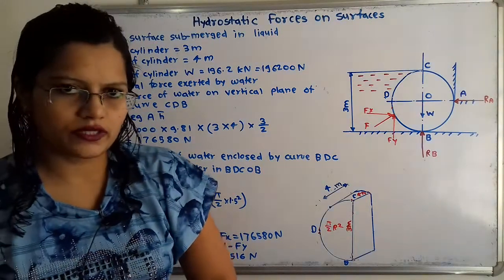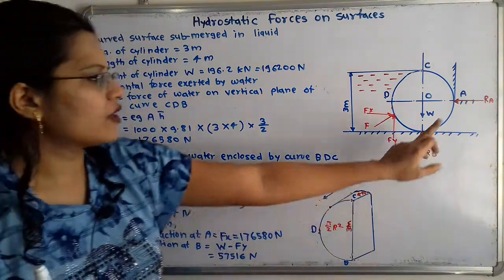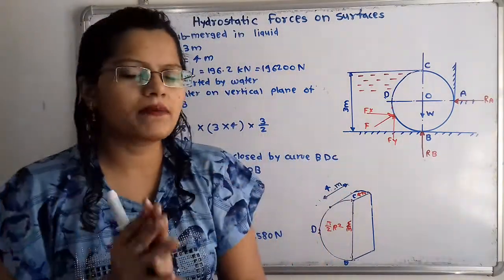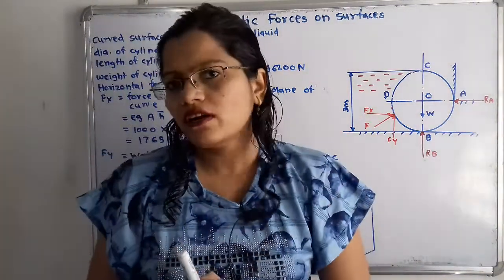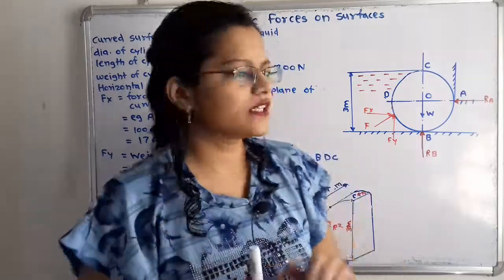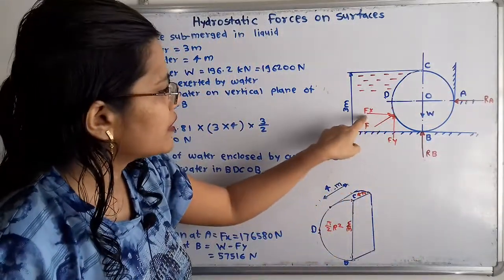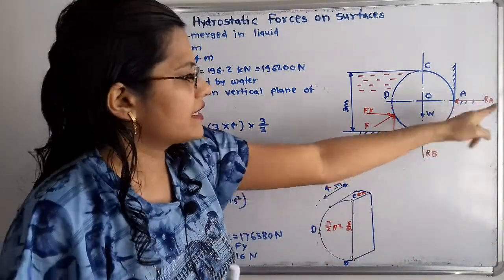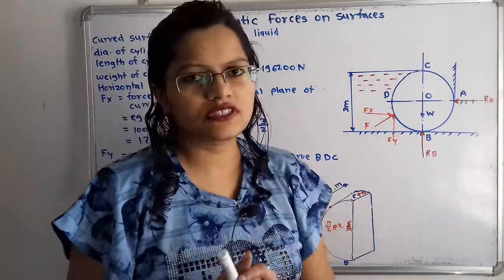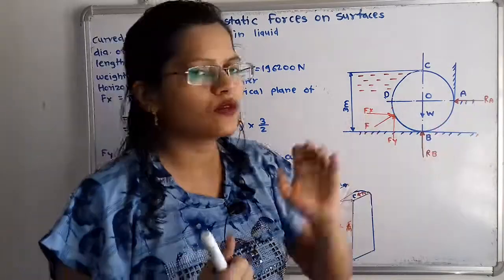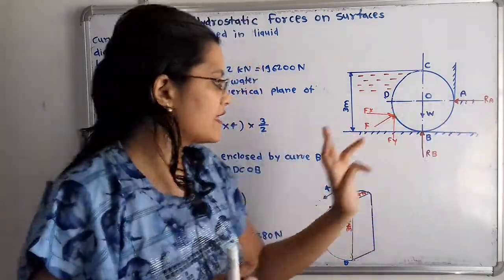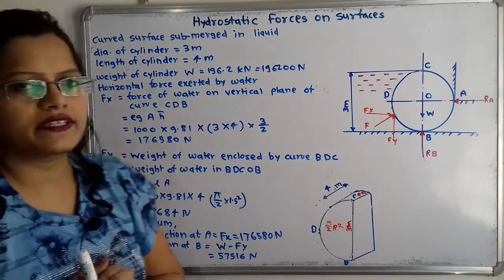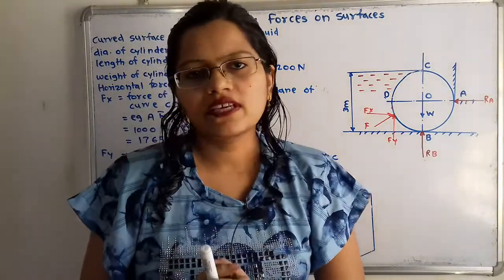Now we find RA and RB using equilibrium of the cylinder. Balancing horizontal forces: FX acts towards the right and RA acts in the opposite direction. Therefore FX equals RA, so RA = 176,580 Newton.